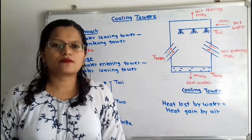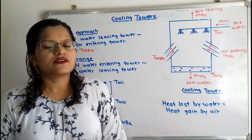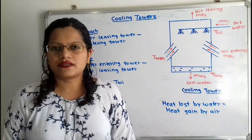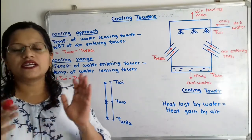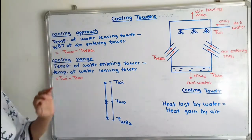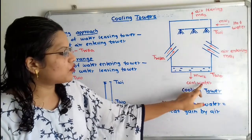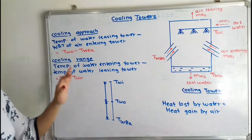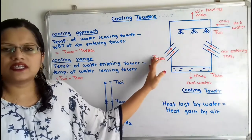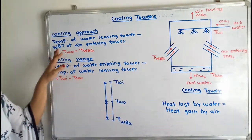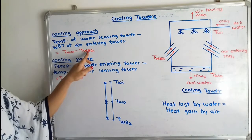These are the performance parameters for the cooling tower. The performance of a cooling tower is measured with the help of these two parameters. The first one is the cooling approach — it is the difference in temperature between the water leaving the tower (TWO) and the wet bulb temperature of air entering the tower. So cooling approach equals TWO minus TWB-A.